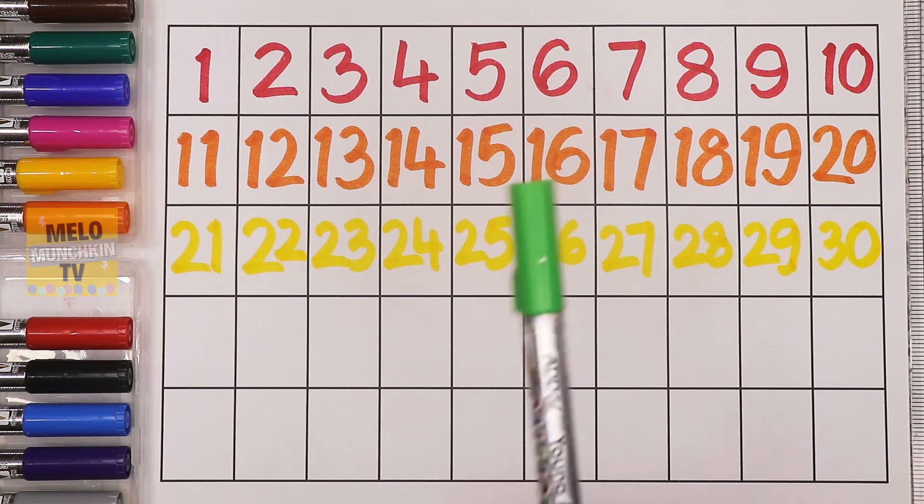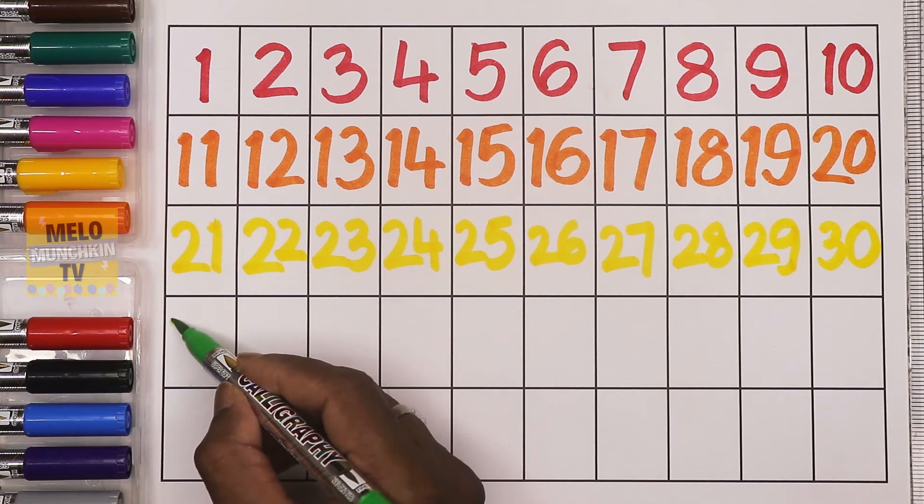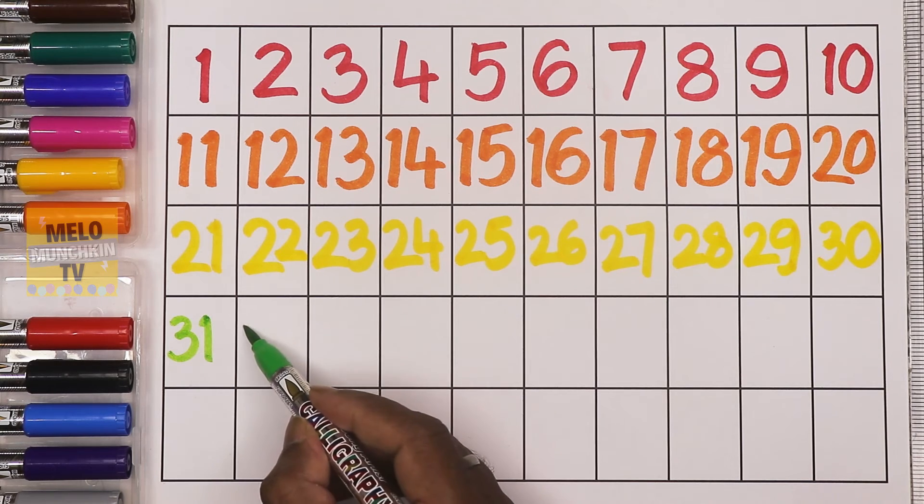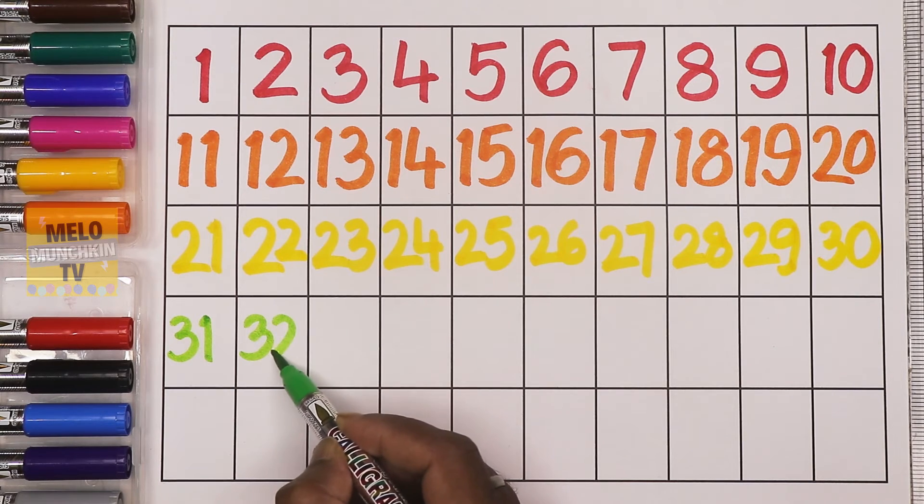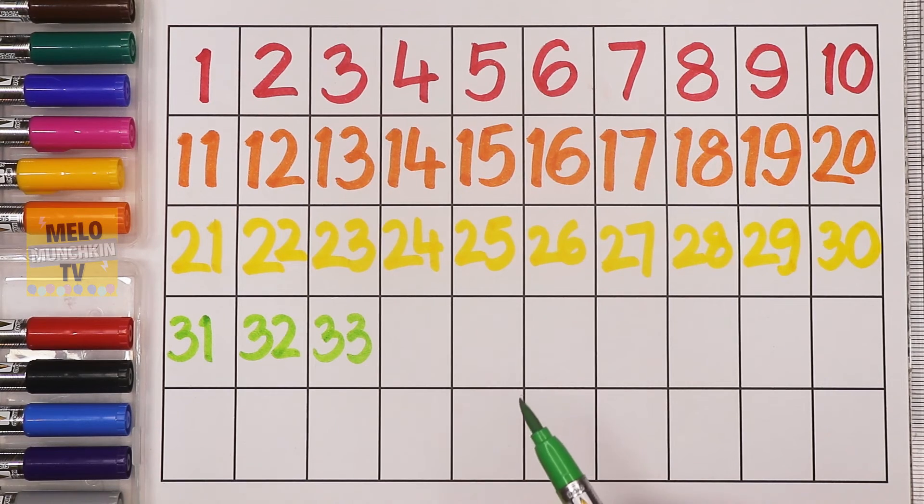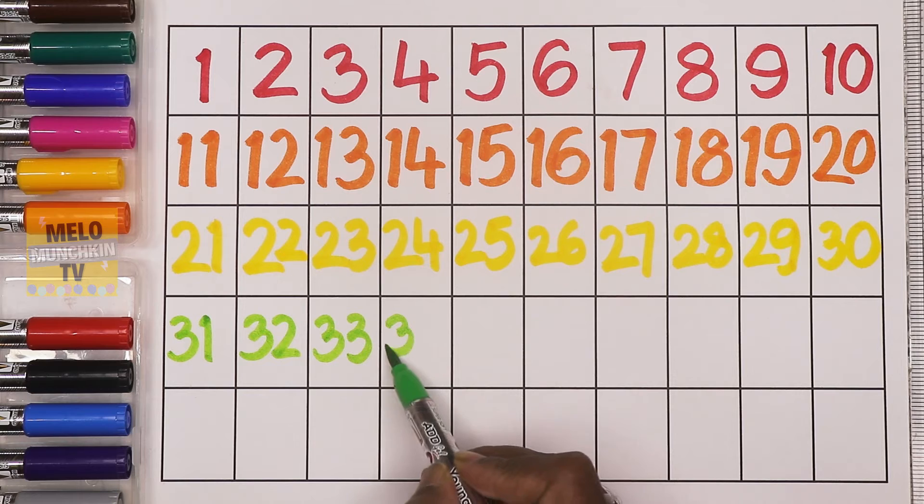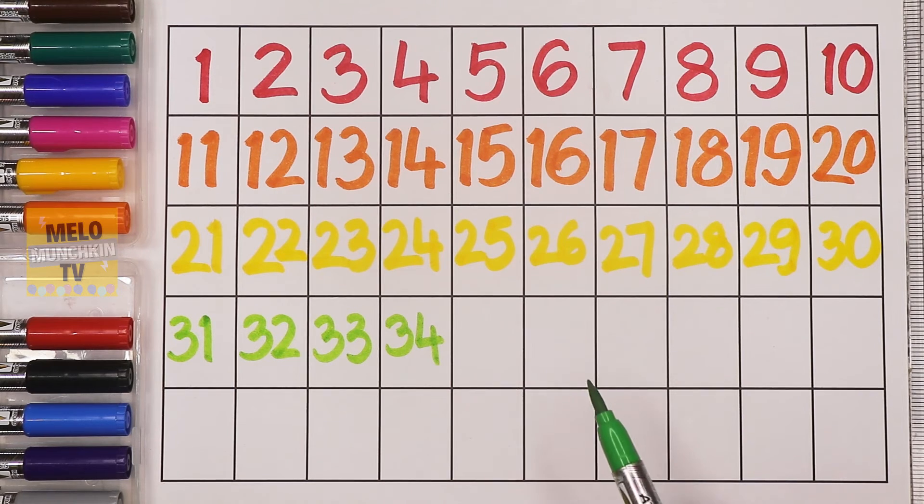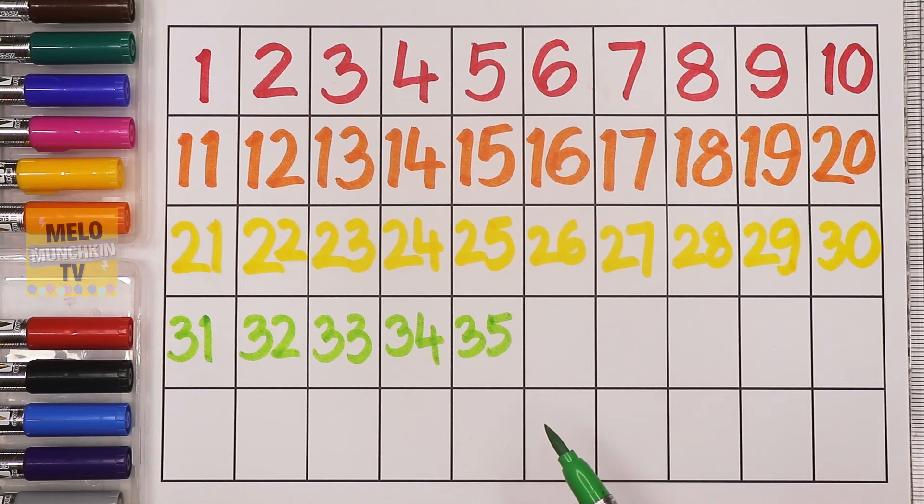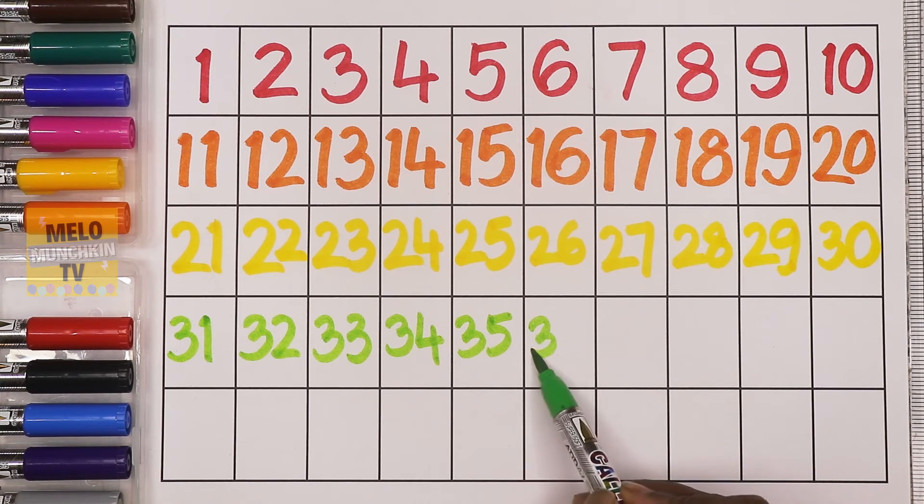Light green color. 3-1, 31; 3-2, 32; 3-3, 33; 3-4, 34; 3-5, 35; 3-6, 36.